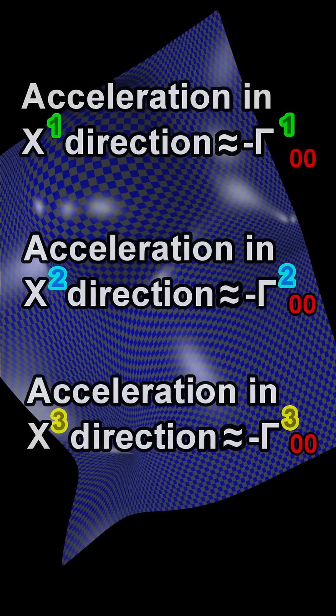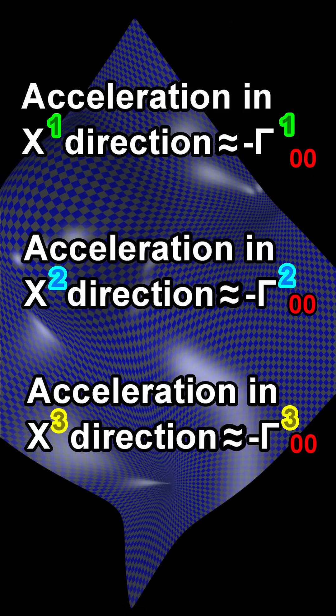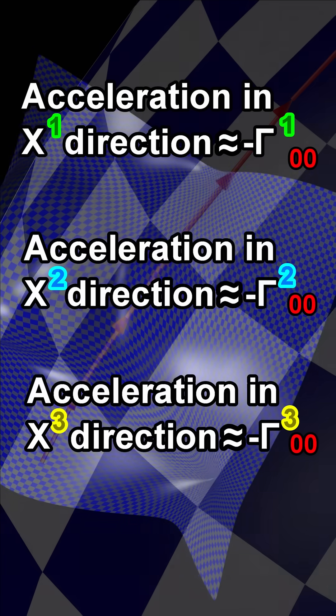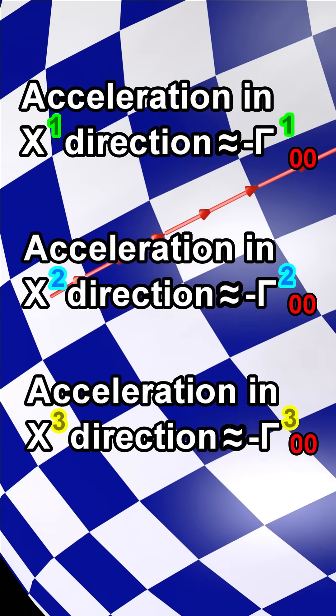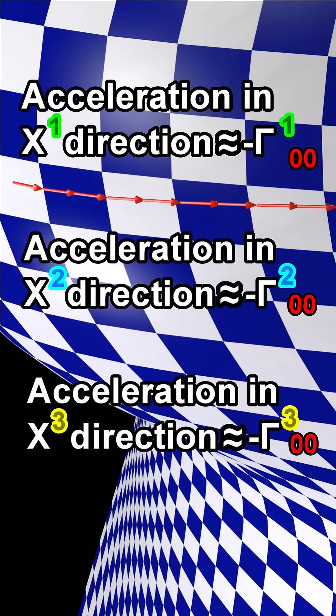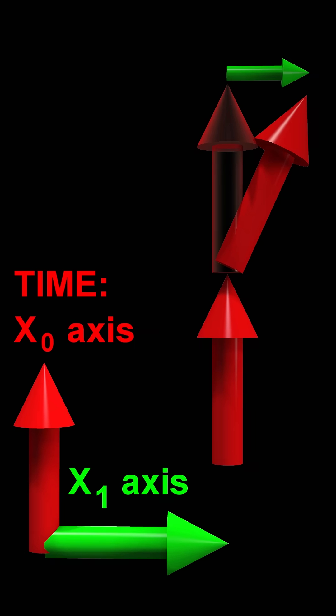the acceleration due to gravity is approximately equal to the following symbols related to the curvature of space-time. In these cases, the gravitational acceleration is approximately equal to the rate at which the basis vector for time changes as it moves forward in time. This change is due to curvature.